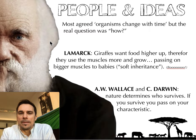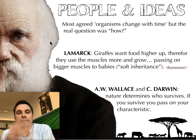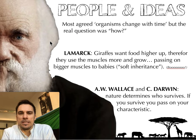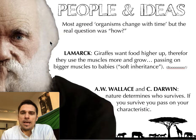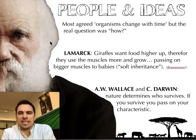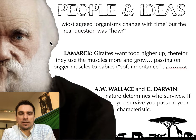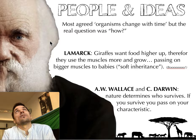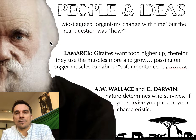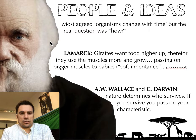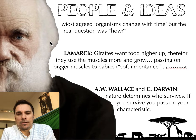Some of the early beliefs about how things changed over time — why we have so many different species out there on the planet — came from Jean-Baptiste Lamarck. He's a French biologist, and we all sort of accepted what Lamarck said early on, but it wasn't necessarily correct. Lamarck proposed the idea that things change because they need to or they want to. A good example is the giraffe: it's very tall because the food is up high and it really wants to get to that food, so it stretches and gets tall.